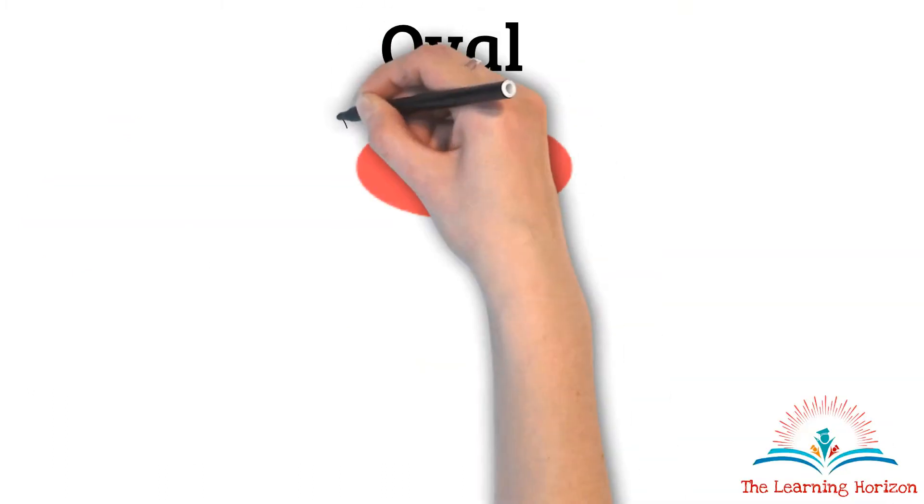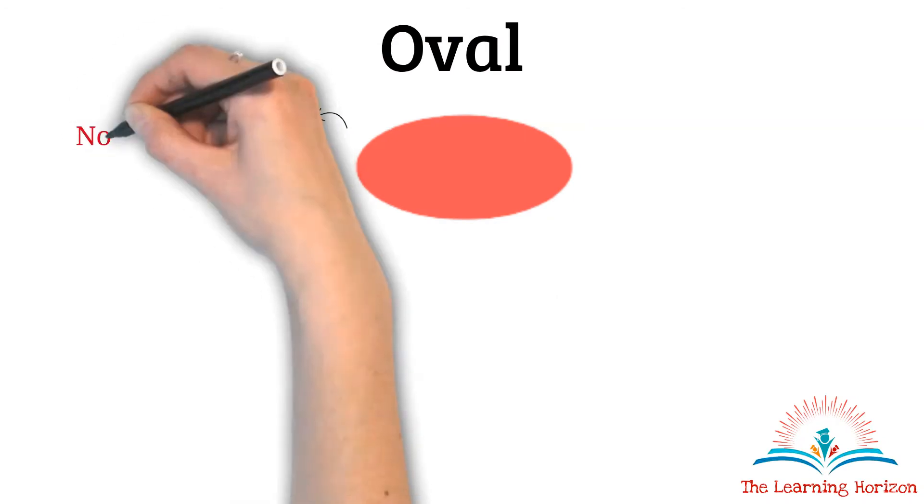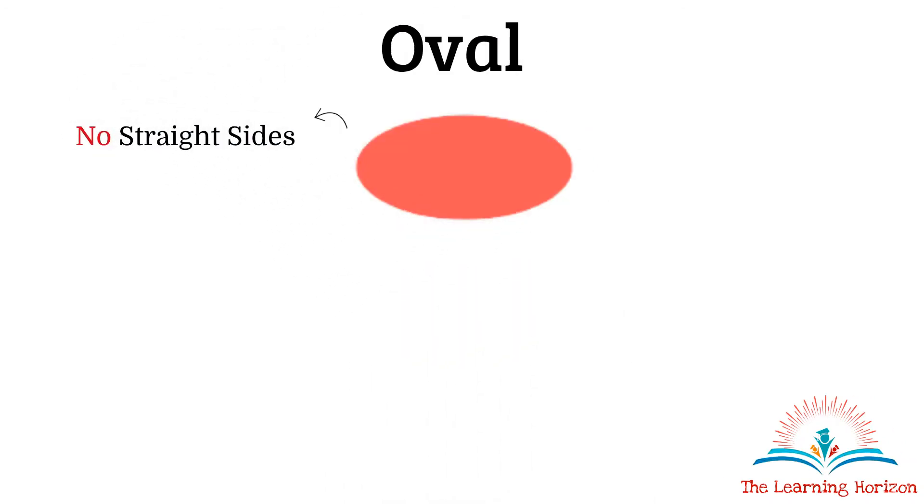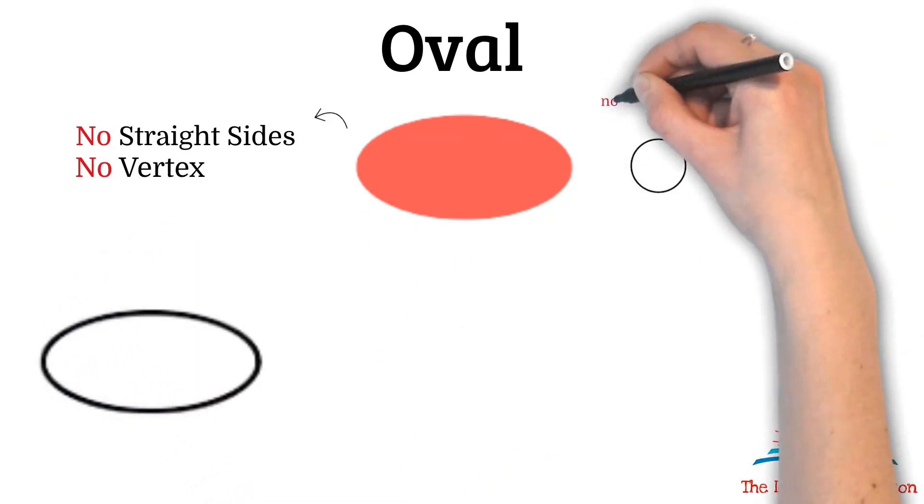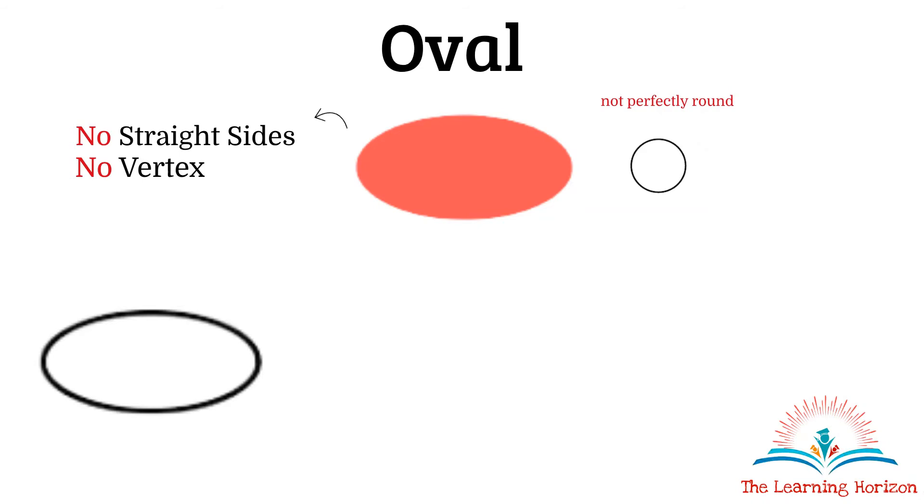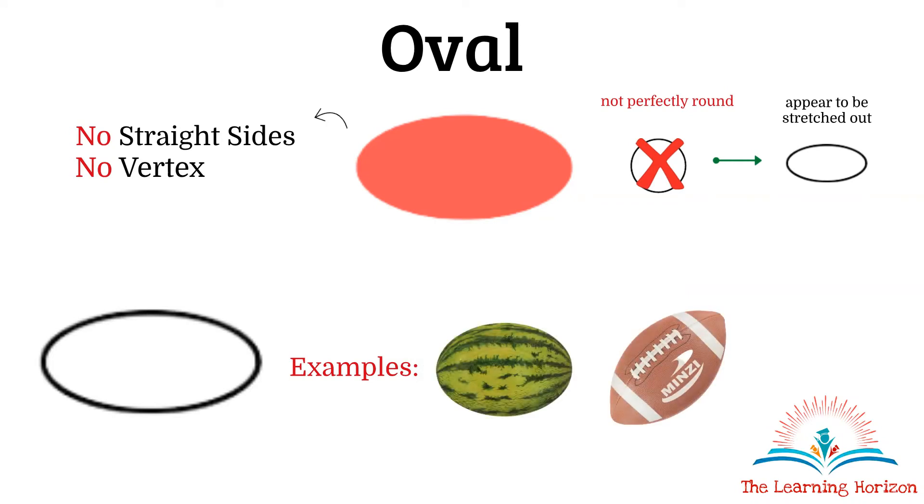Oval. Ovals also do not have any straight sides and hence they do not have any vertex too. They are also made up of curved line like a circle, but they are not perfectly round. They appear to be stretched out. Some real world examples for an oval are a watermelon or a rugby ball.